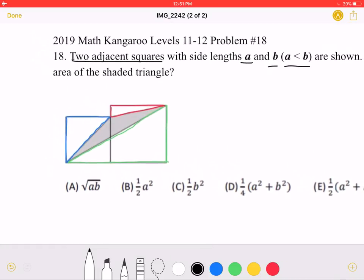So, this smaller square must have side lengths A, and the larger square must have side lengths of B.